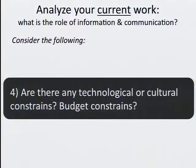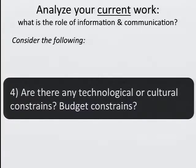Fourth is thinking about constraints. Budget constraints are obvious, but we also have technological constraints such as connectivity, and then there are cultural constraints. There are some countries in Africa where women are not allowed to have a cellular phone because their husbands think they will use it to cheat on them. So depending on who holds the information and who we want to talk to, this must be considered country by country.